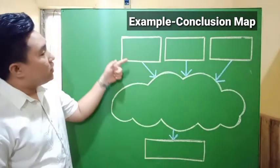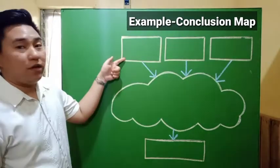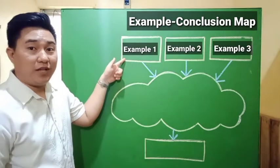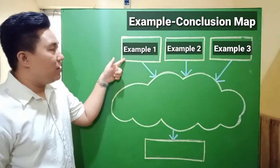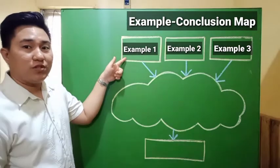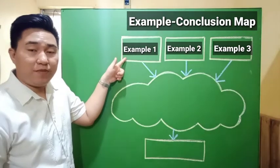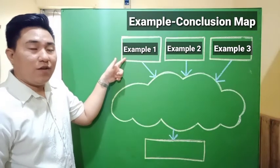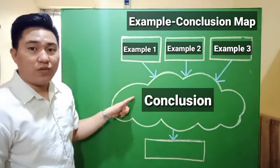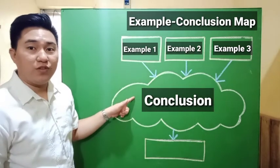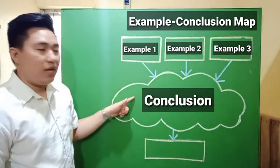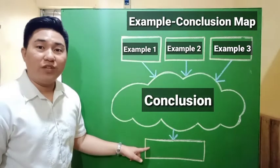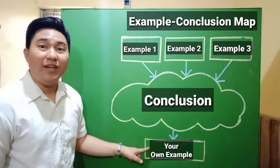The three boxes above are where we will place the examples for the lesson. Then from these examples, we will observe the pattern and investigate to generate a conclusion to represent the rule. And as we conclude, it is your time to give your own example.